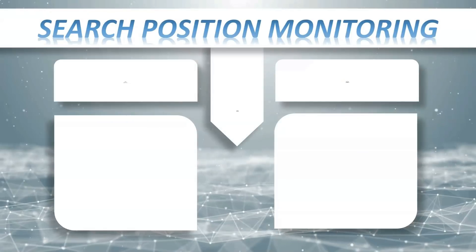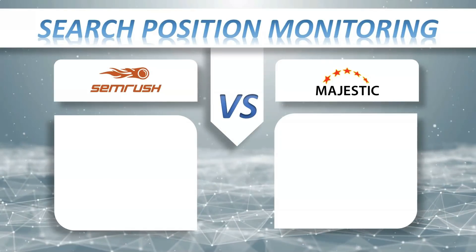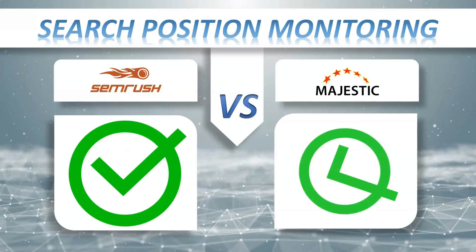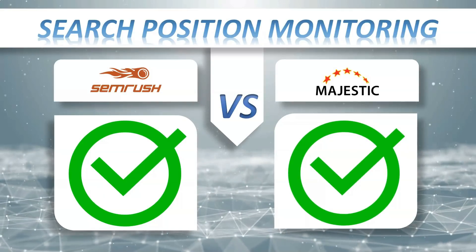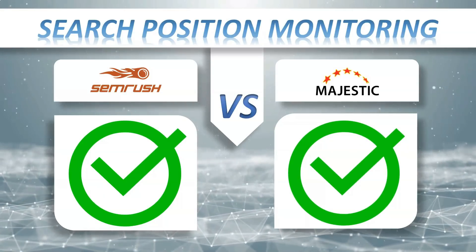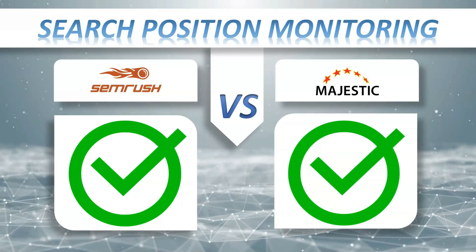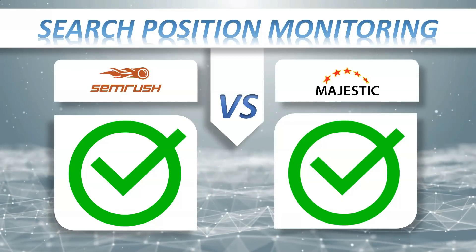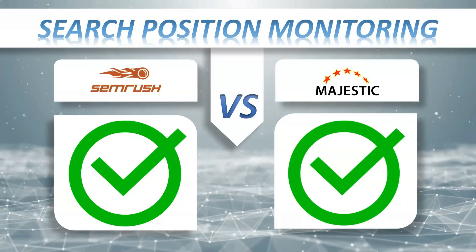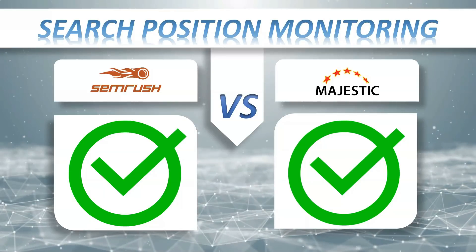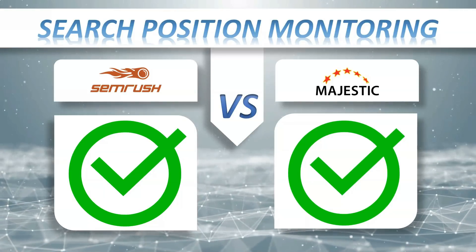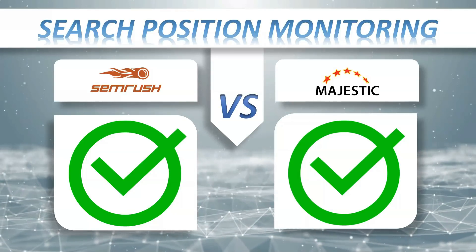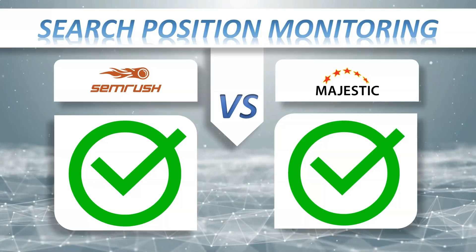Search position monitoring: SEMrush plus, Majestic plus. No matter what your SEO speciality is — whether you do on-page SEO, write content, build links, or run technical audits — chances are you'll have to measure the impact of your work on the website's ranking. This is especially true if your website operates in a local space, since Google's results can change heavily depending on geolocation.